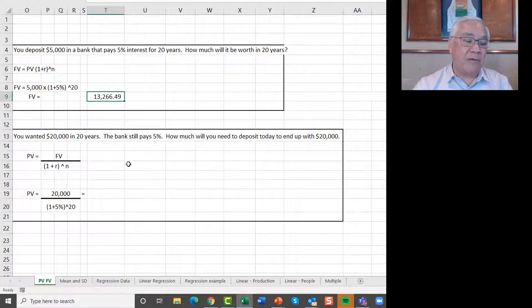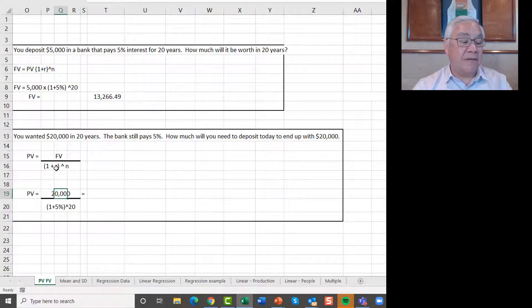Now let's go the other way. Let's say you don't want thirteen thousand in 20 years, you want 20. So let's go in reverse and let's say if we want twenty thousand, how much will we have to put in today? So here, here's the formula, it's 20 future value, twenty thousand, divided by one plus the rate of interest, five percent, raised to the twentieth power.